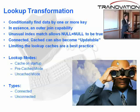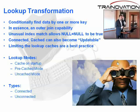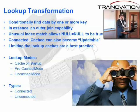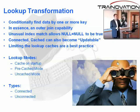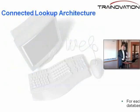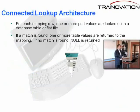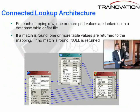Lookup modes: cache on startup, pre-cached mode, and uncached mode — these are the different ways the lookup functions. The two basic types of lookup are connected and unconnected. We're going to introduce you here to the connected lookup architecture first. We'll talk about unconnected in another lesson.